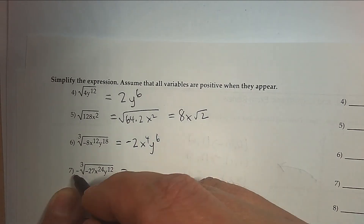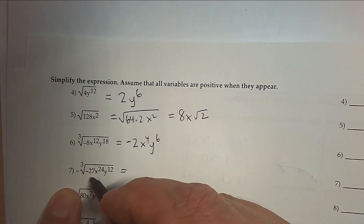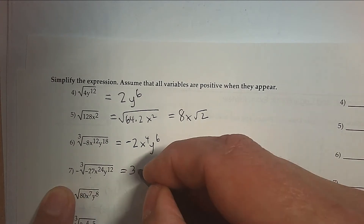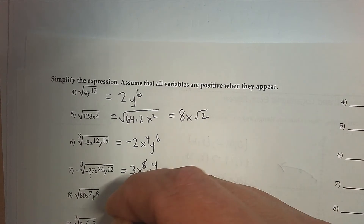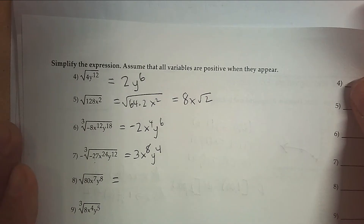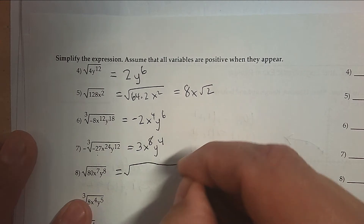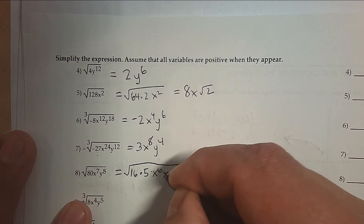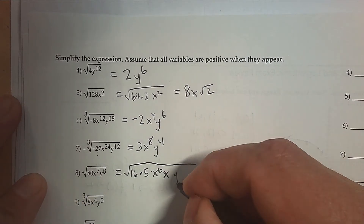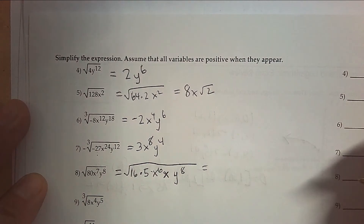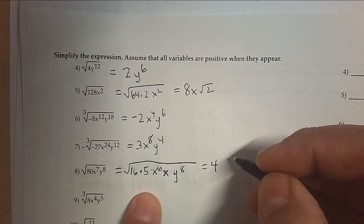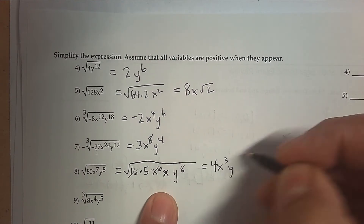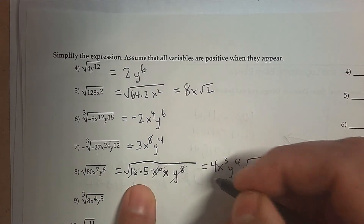Here, we have two negatives going on. The cube root of −27 is −3, but the negative in front makes it a positive 3. And again, the cube root and the exponent divide by 3. The square root of 80 can be written as 16 times 5. x to the 7th can be written as x to the 6th times x. And y to the 8th is perfect. So when I simplify it, the square root of 16 is 4, the square root of x to the 6th — divide by 2 — and y to the 8th divide by 2. What's left behind is just √(5x).